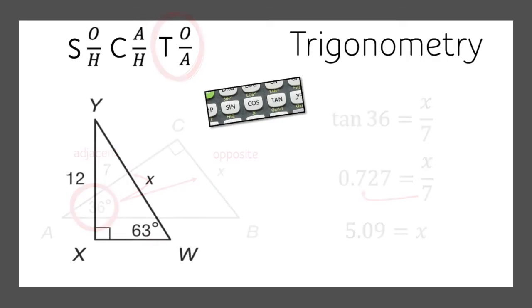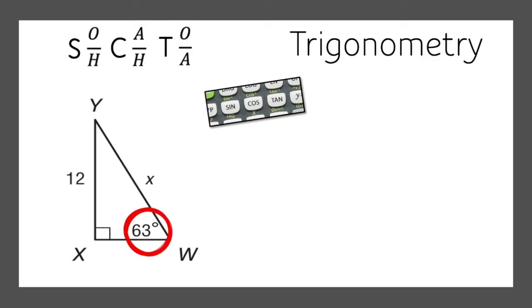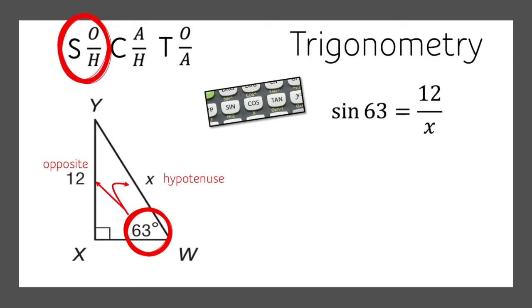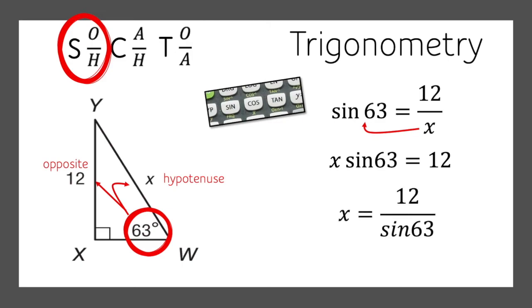Let's try another one. This time we're missing the hypotenuse. We know 63 degrees and we know the opposite side, but we need the hypotenuse — so opposite and hypotenuse means sine. We know the sine of 63 equals 12 divided by x. We multiply both sides by x, then divide both sides by the sine of 63, so x equals 12 divided by the sine of 63. Plug that into your calculator, and the missing hypotenuse is 13.47.